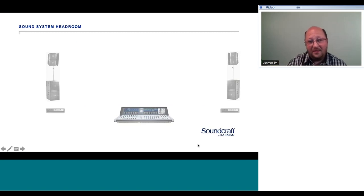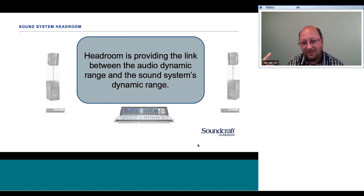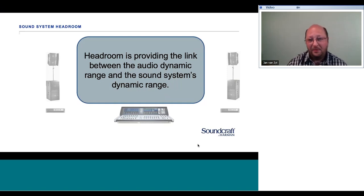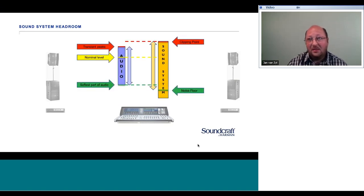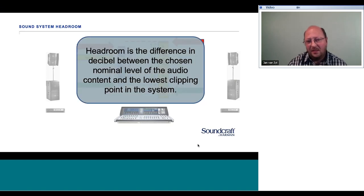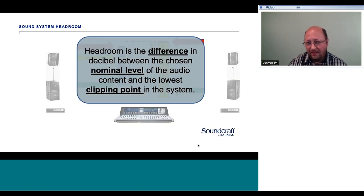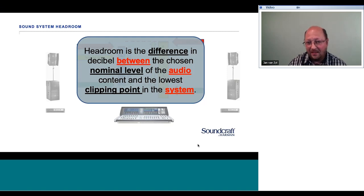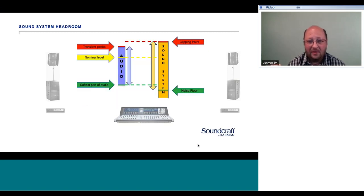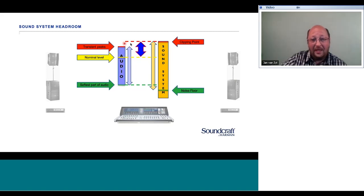So if we look at Headroom: we've got our audio, we've got the sound system, and Headroom is going to be the link between the two. Looking at the definition again — Headroom is the difference in decibels between the chosen nominal level of the audio content and the lowest clipping point in the system. It's the difference between the nominal level of the audio and the clipping point of the system. That's our link.